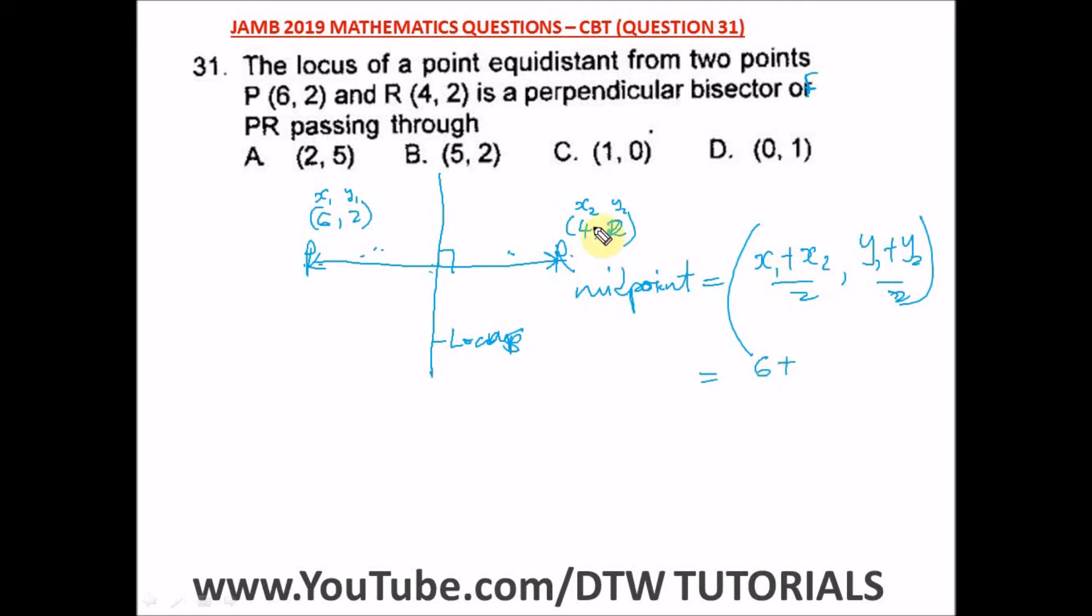Let us put in our values for x1. Our x1 is 6 plus our x2, that is 4, divided by 2. Comma, what is our y1? Our y1 is 2 plus our y2, plus 2, divided by 2. So what do we have here? That is 10 divided by 2, comma 4 divided by 2. So here we have a 5, and here we have a 2. So we have midpoint at 5 comma 2. This is our answer and our right option here is option B.